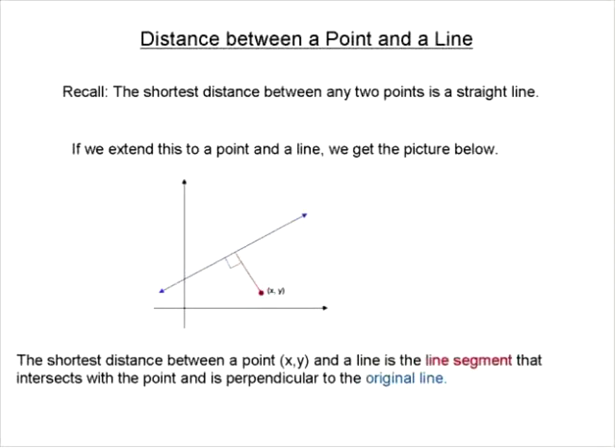Let's look at another topic here. We're trying to find the distance between a point and a line. We're going to go back to something you probably remember from geometry, maybe grade 3 or grade 4: the shortest distance between any two points is always a straight line. That's one of the base hypotheses of geometry.